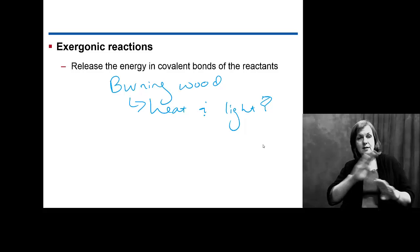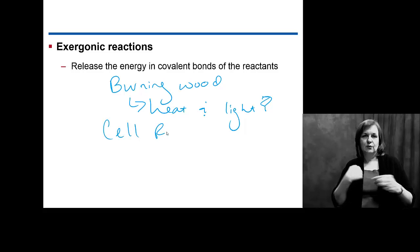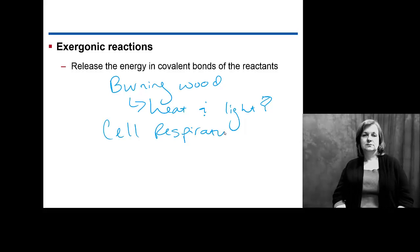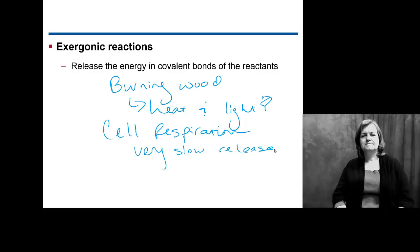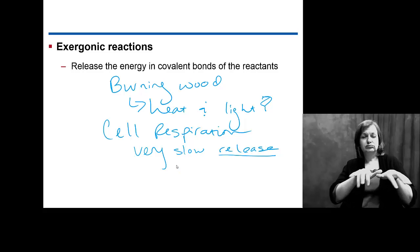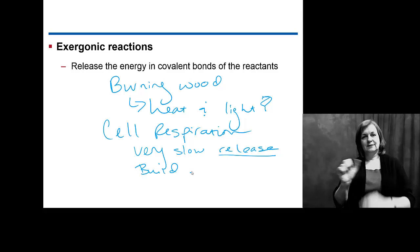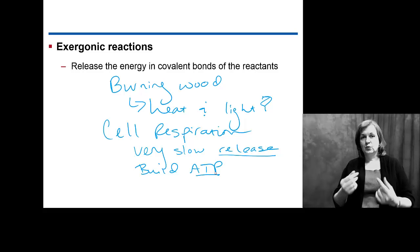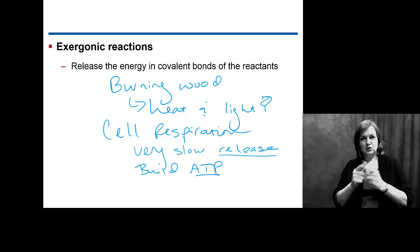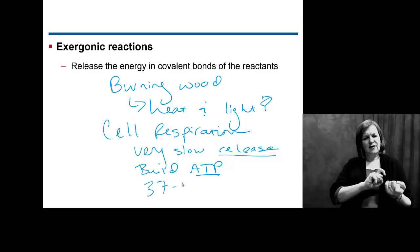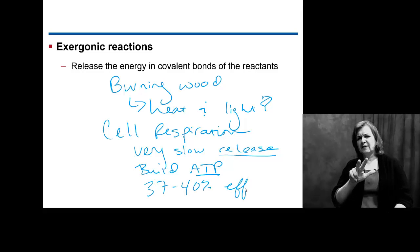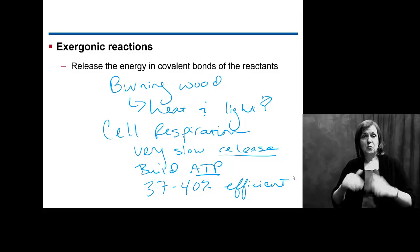When we look at biological processes, things like cell respiration we've been talking about, we're looking at releasing energy very slowly. And we're looking at that release of energy to actually help us build ATP. So we're taking energy from a stored form and converting it into a stored form that your cells can use. Remember we said this is only about 37 to 40% efficient, but it's obviously enough to sustain you.